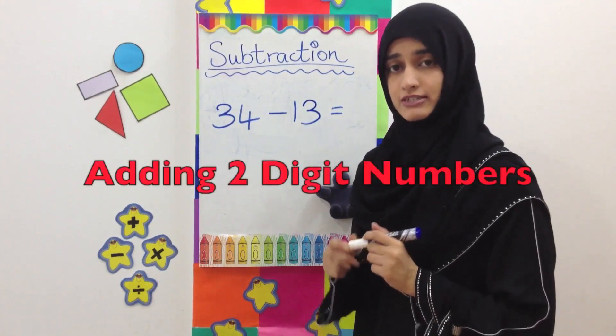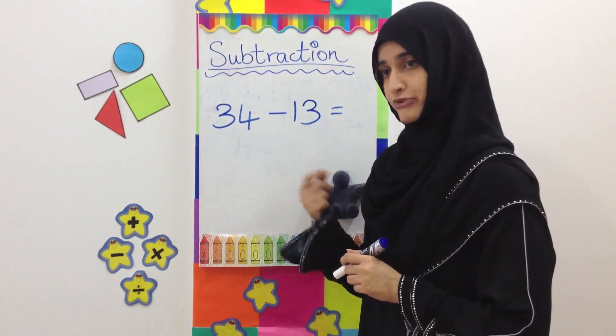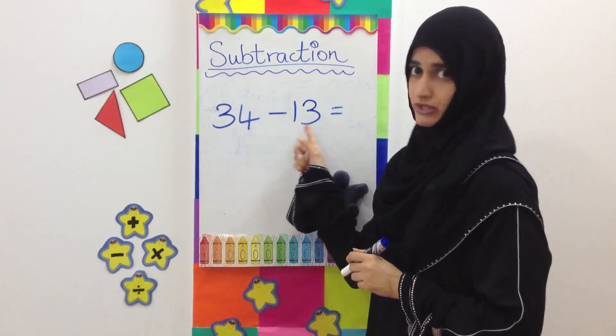Now we are going to learn how we can do subtraction with 2-digit numbers. The number we are subtracting from is a 2-digit number, and we are subtracting a number which also has 2 digits.